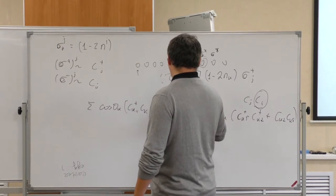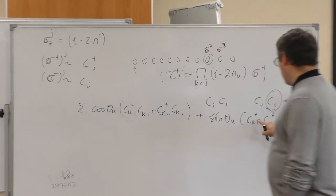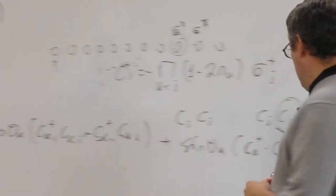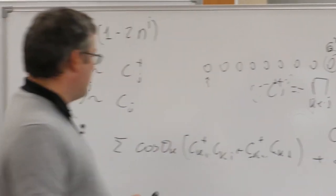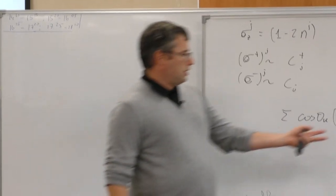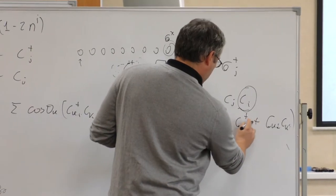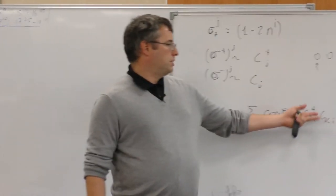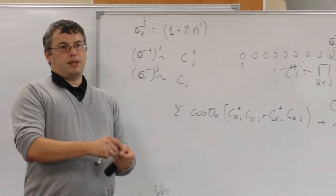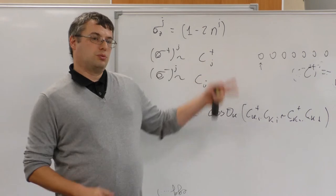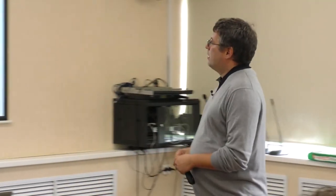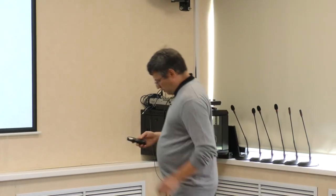Suppose we start from zero particles: this can create two particles at momenta k and minus k, or kill those two particles. There are no terms which change parity—you can only go from 0 to 2 particles or from one particle at k to one at minus k. Because of that, this model is solvable: we can solve each two-level system independently.